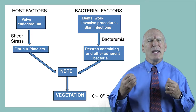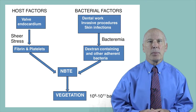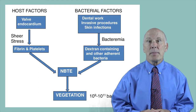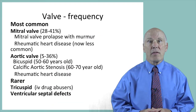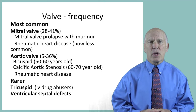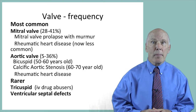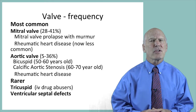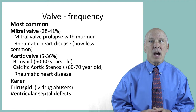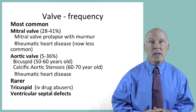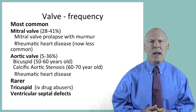The NBTE serves as the ideal site to trap bacteria that enter the bloodstream. Today, lesions of the mitral valve and aortic valves are most commonly associated with endocarditis. Mitral valve prolapse at any age and calcific aortic stenosis in patients age 60 to 70 are among the most common predisposing lesions, as are bicuspid aortic valves in patients 50 to 60. Rheumatic heart disease is now a rare cause of mitral and aortic NBTE.